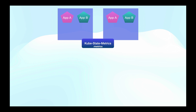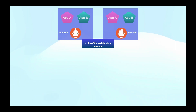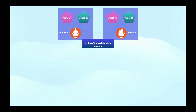Don't confuse kube-state-metrics with metrics server. Metrics server only exposes very few metrics to Kubernetes itself and that data is not scrapable directly with Prometheus. The next component is called a node exporter. Prometheus deploys these exporters as a DaemonSet and they collect system-level metrics like CPU, memory, IO, etc., and expose them in Prometheus format.